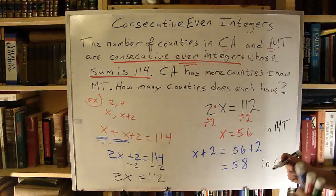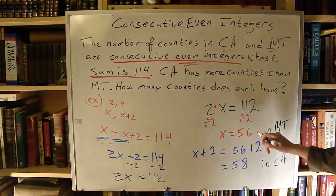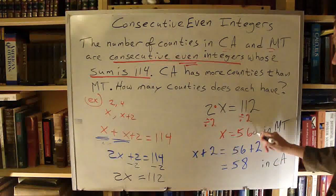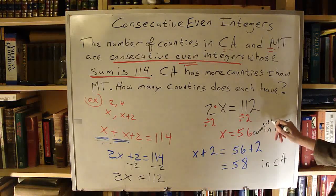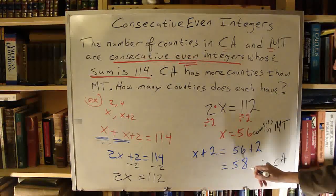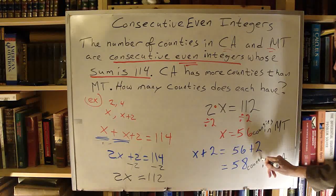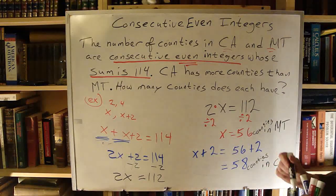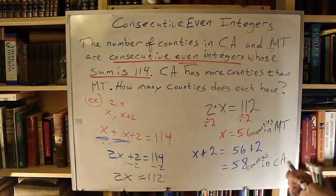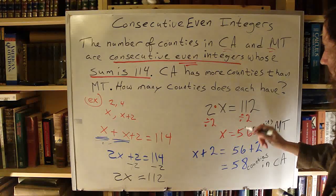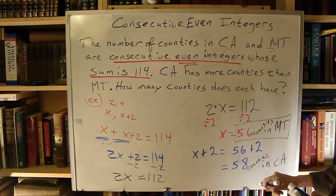How many counties does each have? I still need to write down the units — counties. Now I have both of my answers: 56 counties in Montana and 58 counties in California.